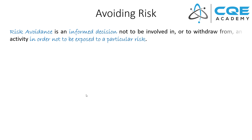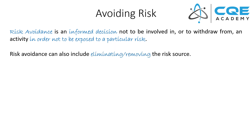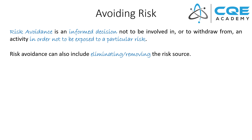Strategy number one is all about avoiding risk. Risk avoidance — and I love this definition — is an informed decision not to be involved in or to withdraw from an activity in order to avoid exposure to a particular risk. For quality professionals, risk avoidance can also look like eliminating or removing the risk source. This is the number one strategy you should use as a quality engineer to treat risk, through things like preventative action.